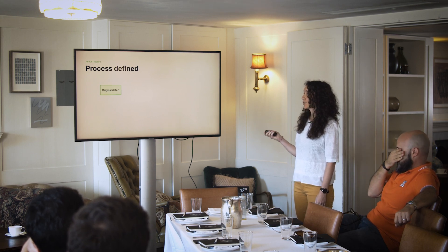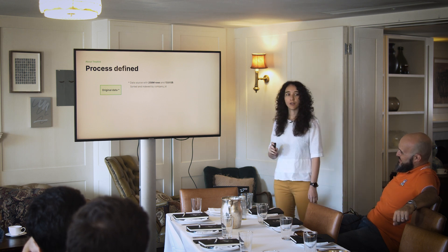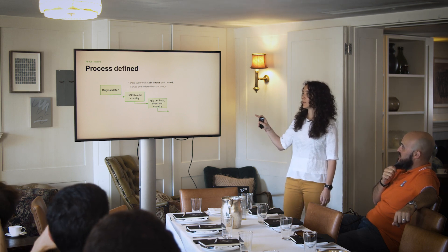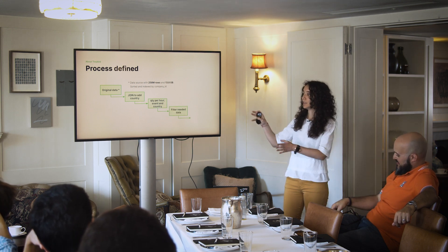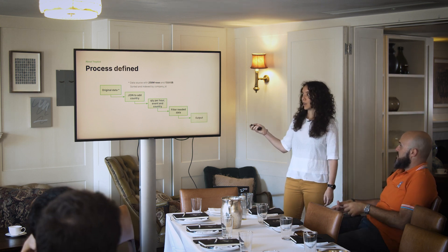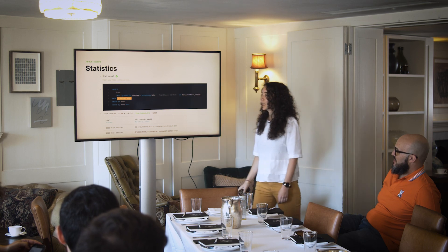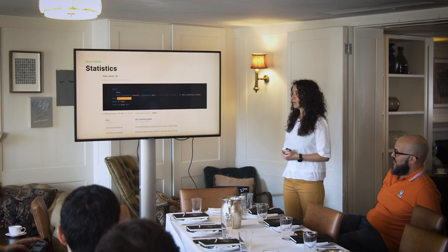We were working with a data source table with 258 million rows and 13.8 gigabytes. This data was sorted and indexed by company ID. The process we defined was: perform a join to add a column with the country, calculate the quantity per hour, type of event and country, and filter the needed data based on date and event type until we get the output. The query was processing 6.76 gigabytes, reading 193 million rows, and taking 2.27 seconds.